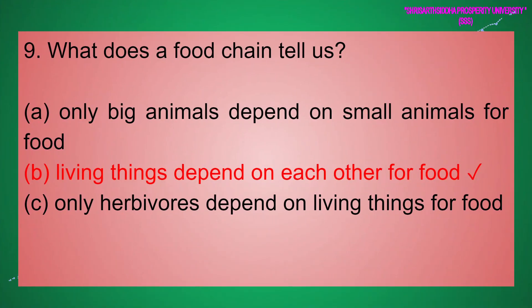Nine: What does a food chain tell us? (a) Only big animals depend on small animals for food. (b) Living things depend on each other for food. (c) Only herbivores depend on living things for food. The answer is (b): Living things depend on each other for food.